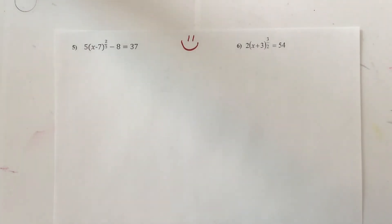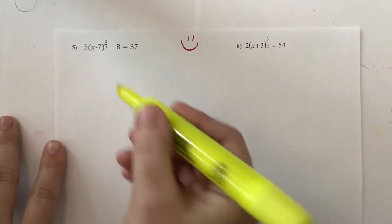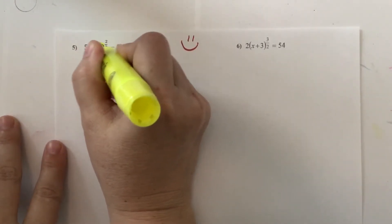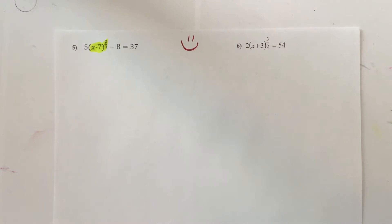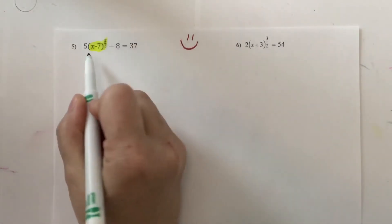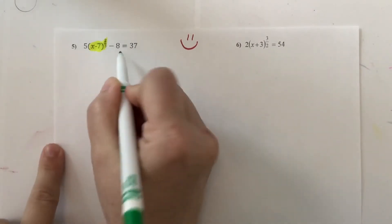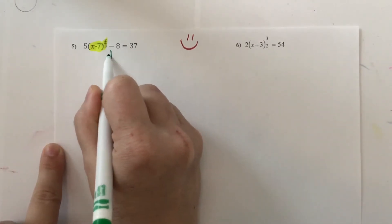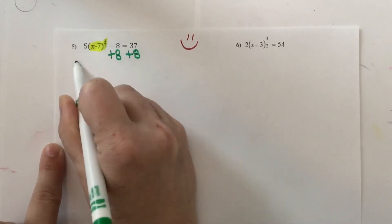Hey everybody. I'm going to work number 5 and number 6 for you that I asked you to do the day before. Remember the variable that's in parentheses with the fraction exponent — we've got to get that by itself. So I need to get rid of the 5 and I need to get rid of the minus 8. Typically we get rid of addition and subtraction first, so I'm going to get rid of the subtraction of 8 by adding 8.